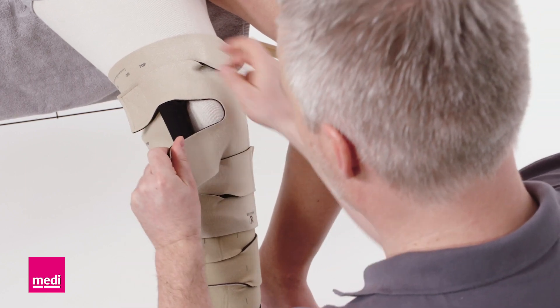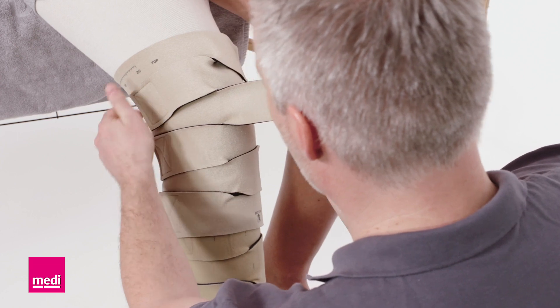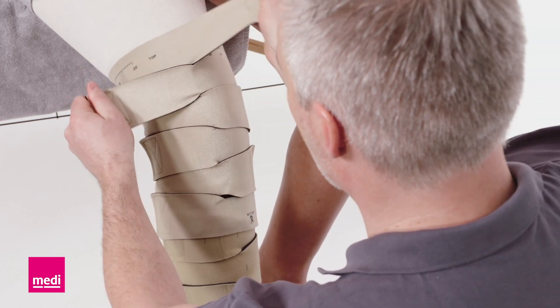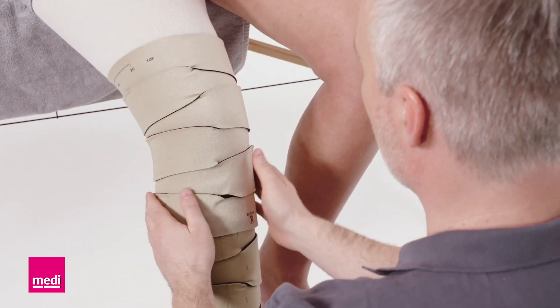Attach the bands alternately from bottom to top so that the garment lays flat and wrinkle-free. Slightly pull the upper band upwards to avoid wrinkles. Hold the top of the garment while attaching the last band.